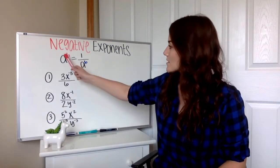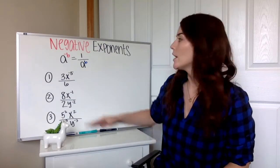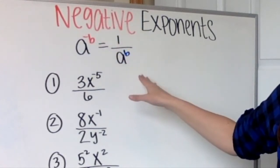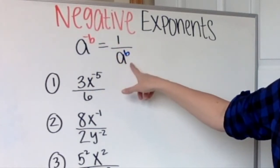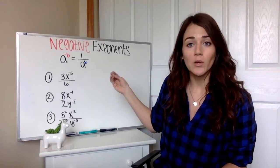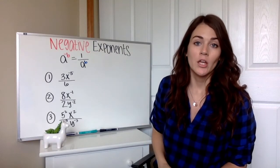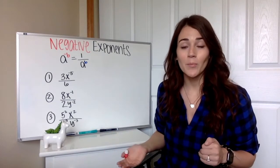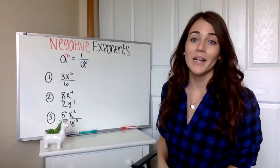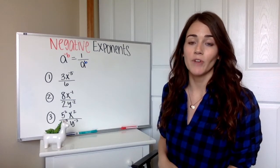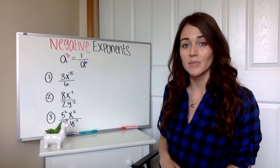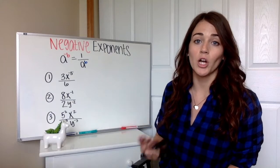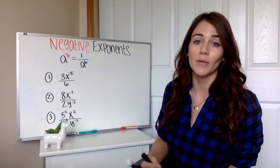So we now have this nice little rule: if we have something to a negative exponent, we can just move it to the bottom of our fraction, and that exponent will become positive. Those two things are equal — they mean the same thing. So let's use that for the next three more basic examples, and then we'll get into some combination problems. Anytime I'm doing a simplifying problem with exponents, if there are negative exponents, I always take care of those first.